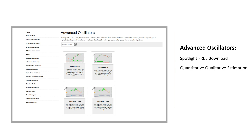In total, there are about 145 to 150 indicators available for a one-time payment of $150. That's not per indicator — it's $150 for all of them, and it's also a one-time flat fee, not a monthly fee. So check that out and pick up the QQE indicator as a free download with this spotlight.